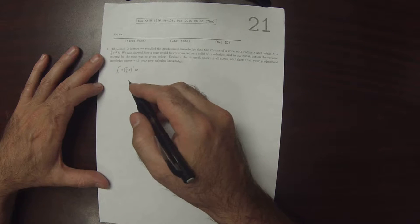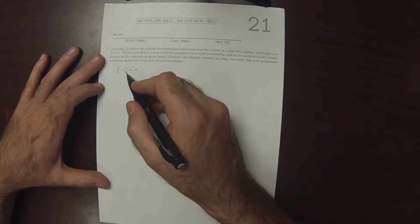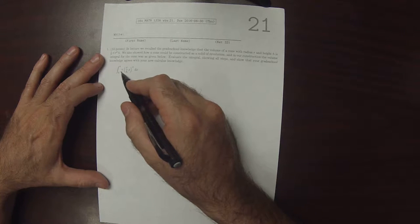So the first step is to observe that r and h are constants, and so is pi, of course.